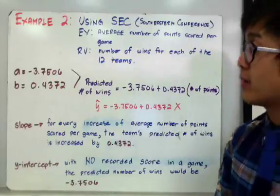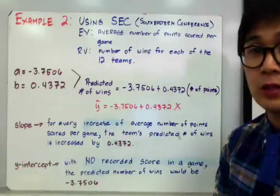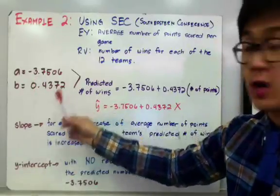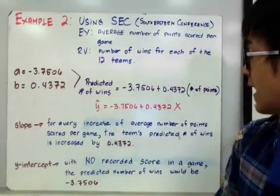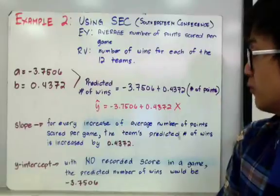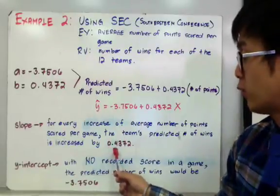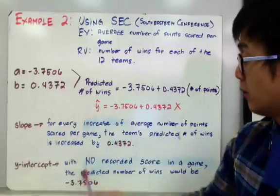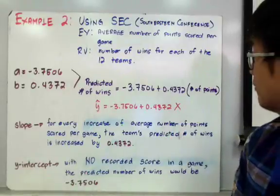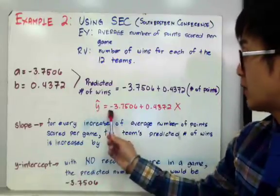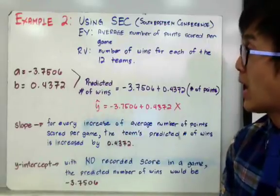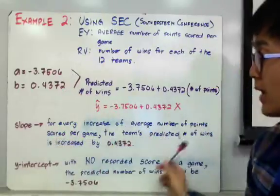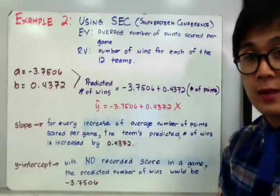In interpreting the slope and y-intercept using the definitions from the previous slide: the slope is 0.4372, meaning for every increase of one in the average number of points scored per game, the team's predicted number of wins increases by 0.4372. To interpret the y-intercept, with no recorded score in a game, the predicted number of wins would be negative 3.7506. That is how we use the calculator to generate a and b, and how to interpret the slope and y-intercept in the context of the problem.